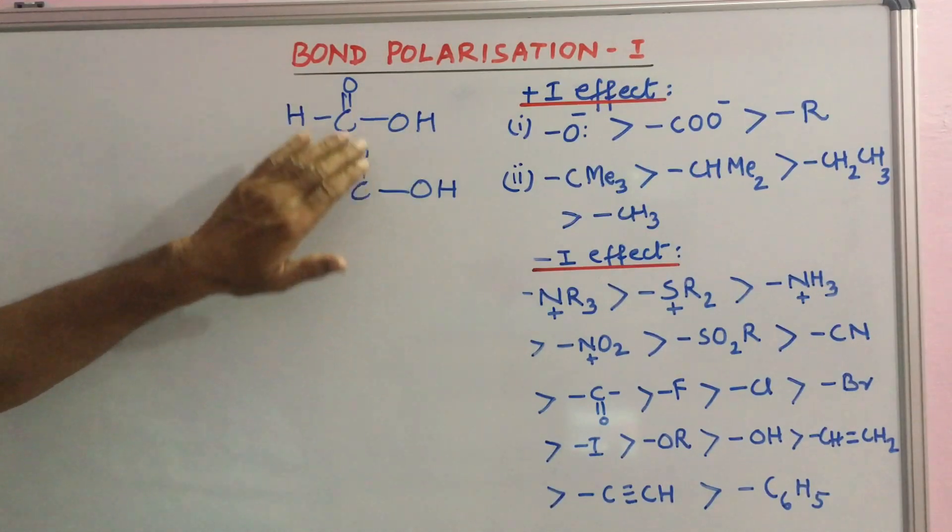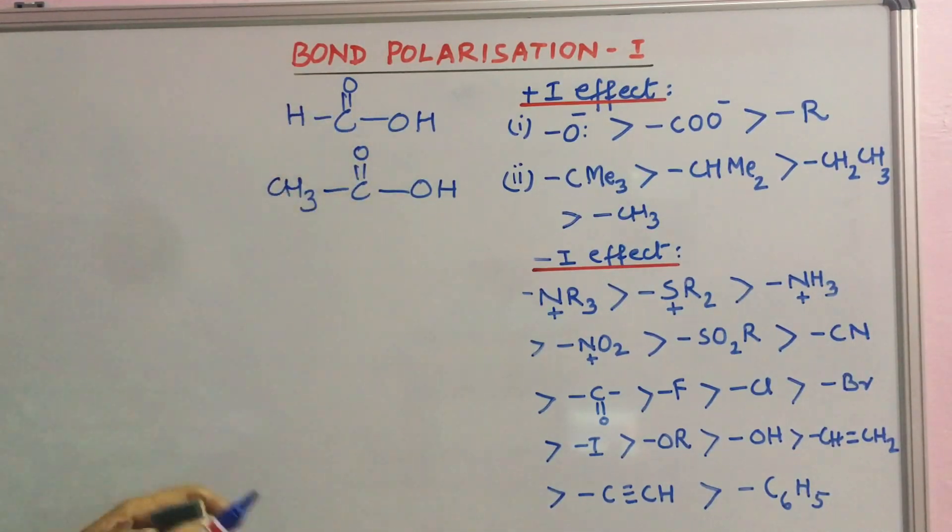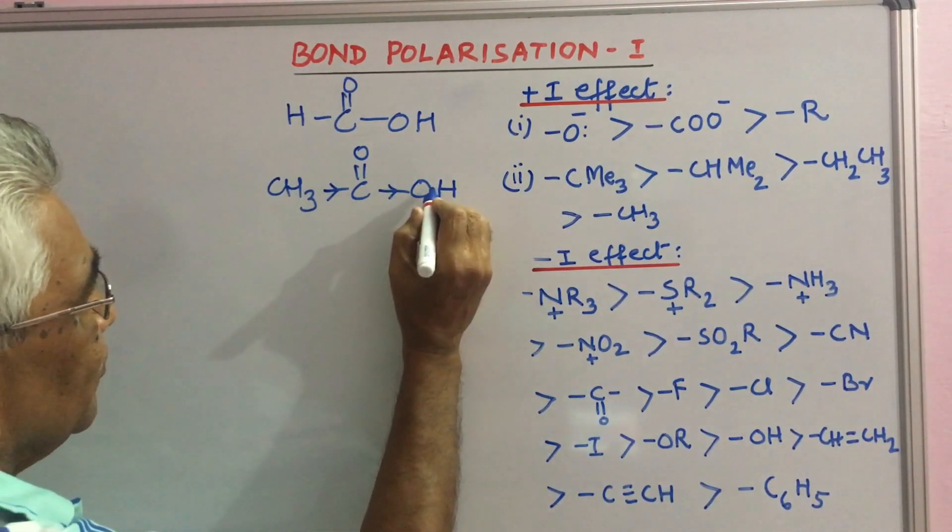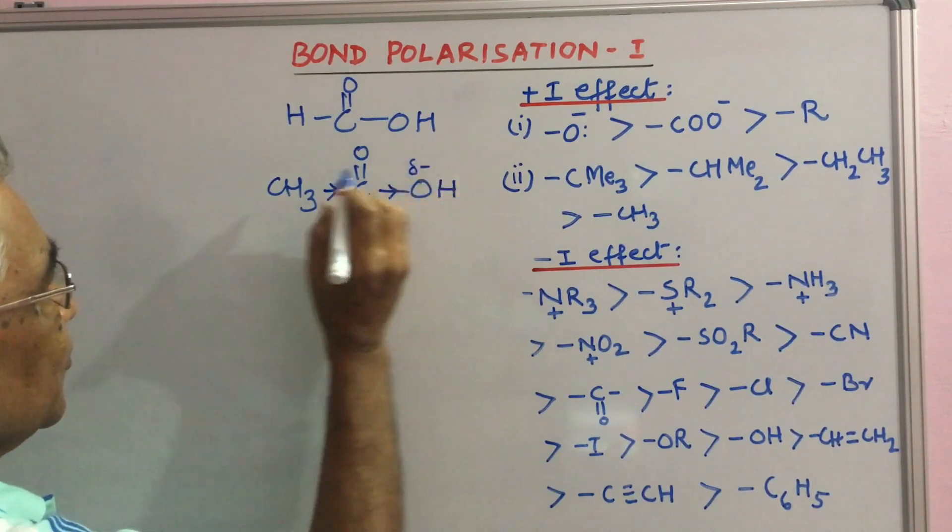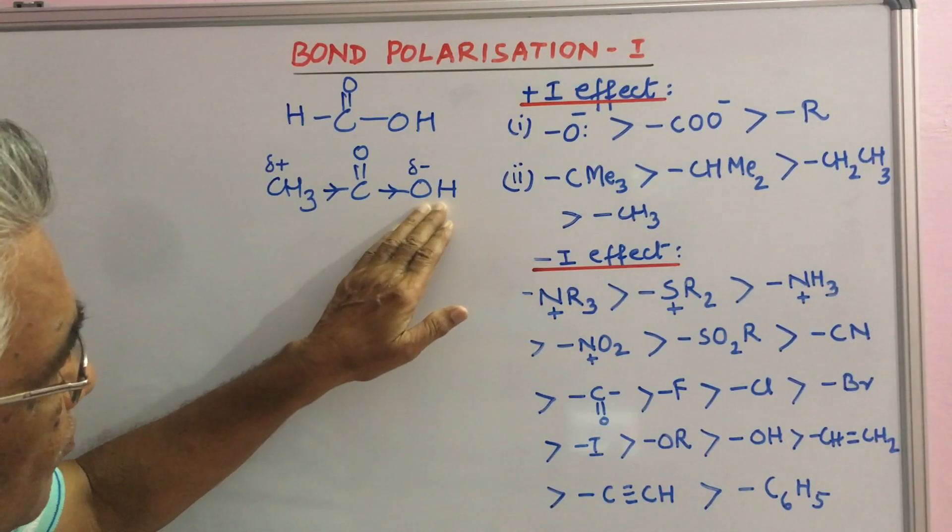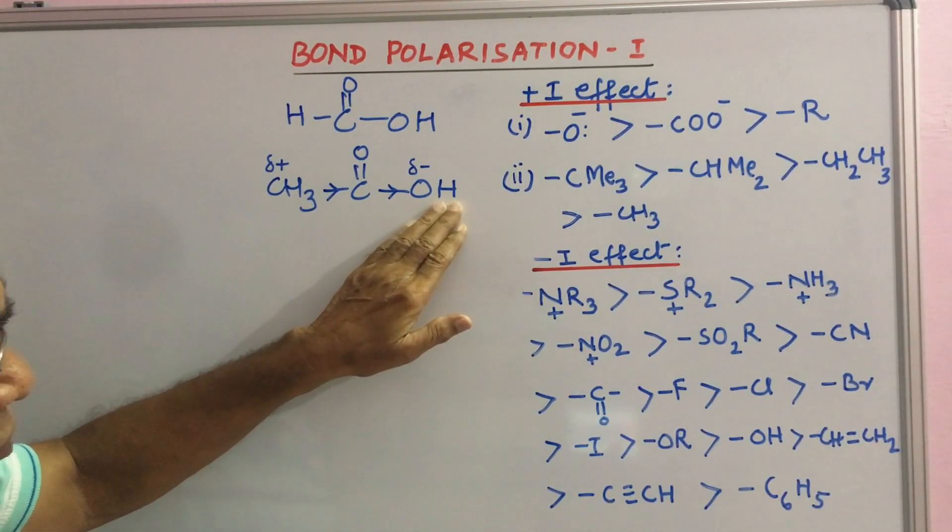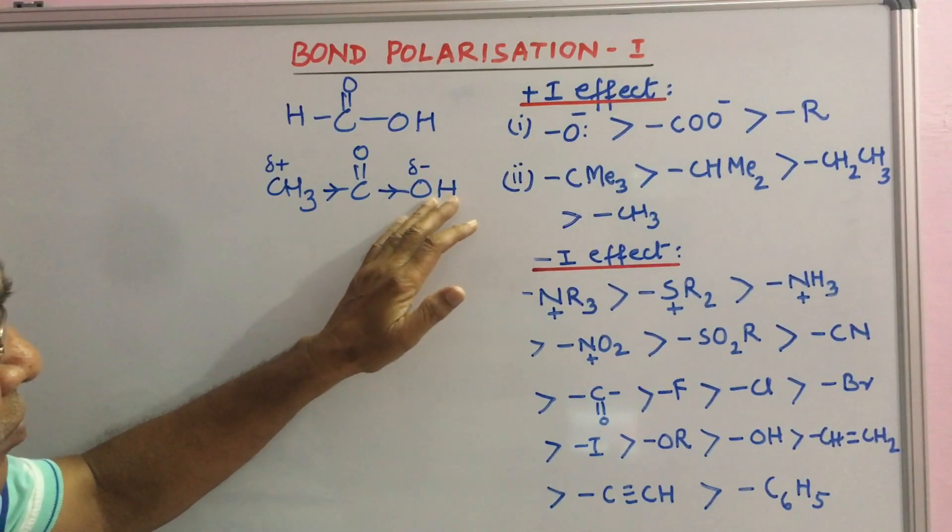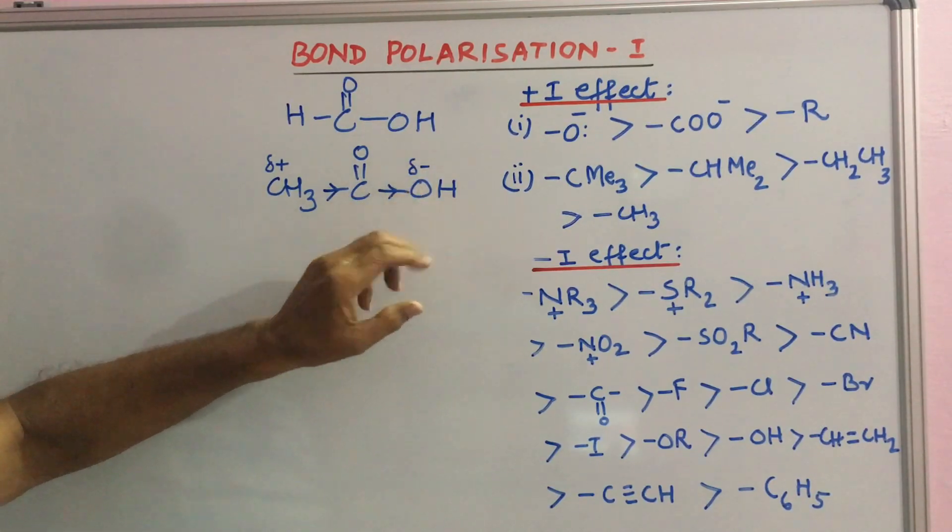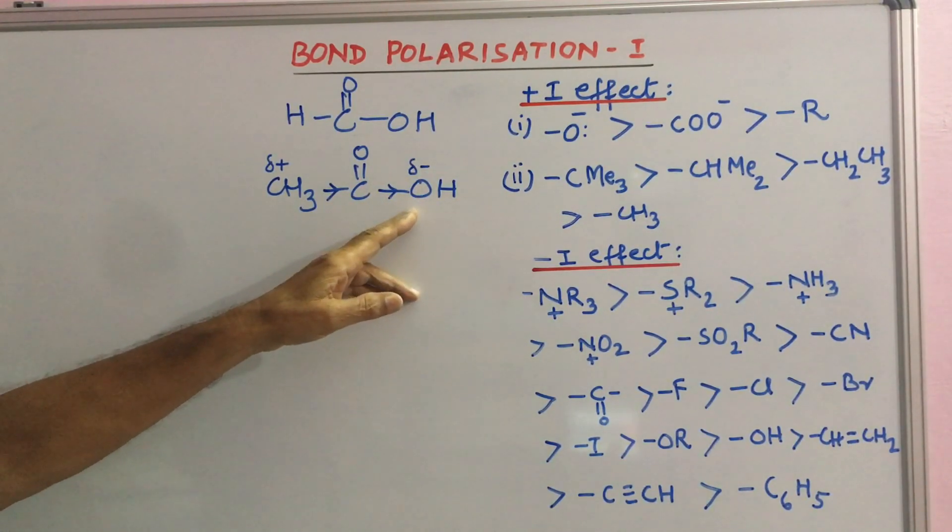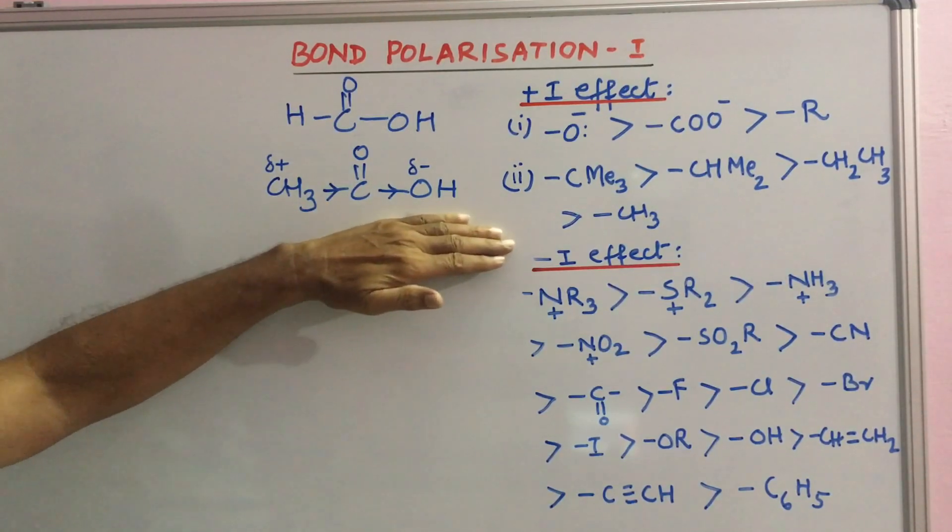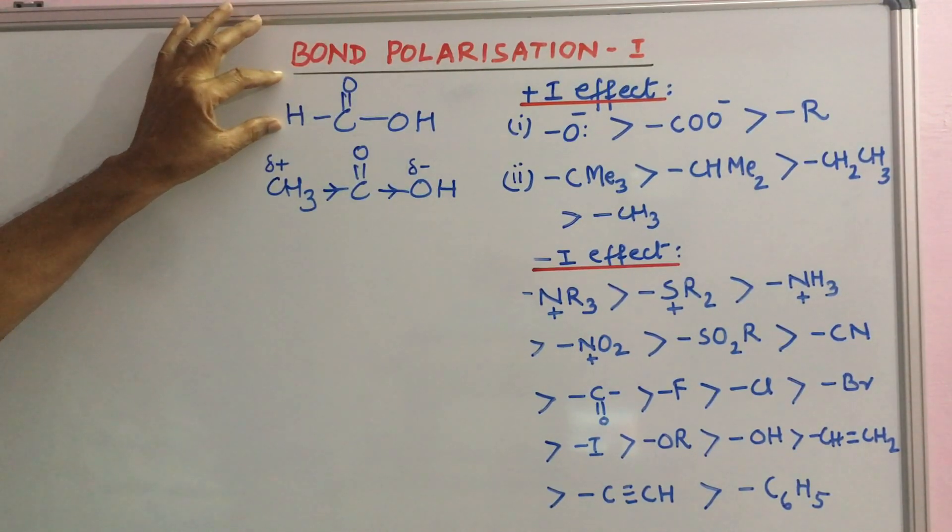If you compare this with this, CH3 has a plus I effect sending away electron density from itself and creating a delta minus charge. Proton, if it wants to leave from here, will have to leave two electrons. This negative charge will discourage having extra negative charge. So this CH3 makes this less acidic than formic acid.